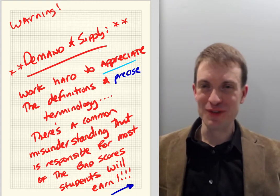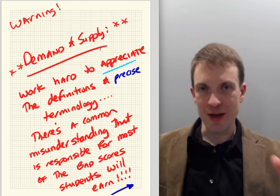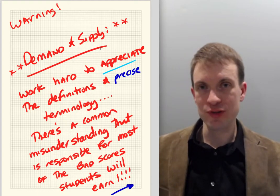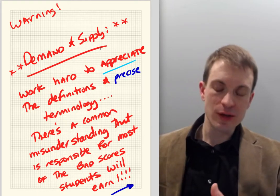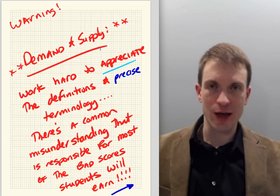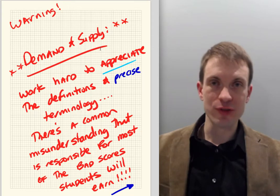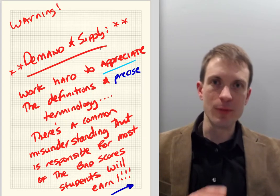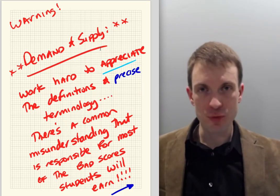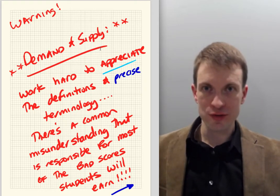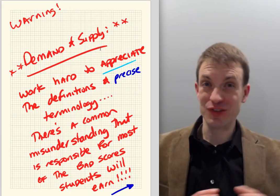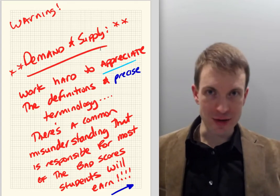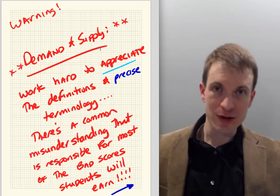On the topic of demand and supply, there are some really important definitions that I think get people into trouble. Usually we're coming into an economics class with a lot of useful economic intuition from life. Here's one place where it gets you into trouble: out in the world people might say that if the price of something rises, demand will fall. From the standpoint of economics, that's completely wrong — when prices rise, quantity demanded falls, and when prices fall, quantity demanded rises.